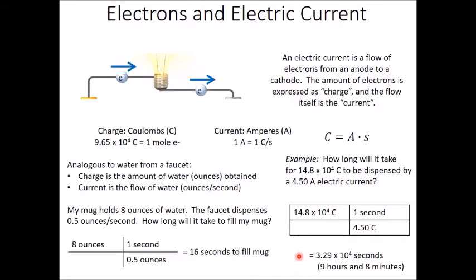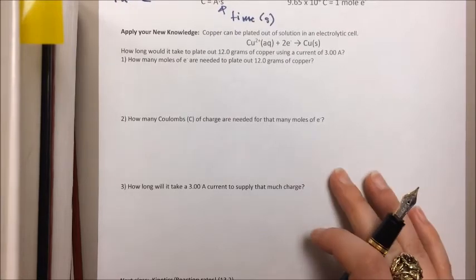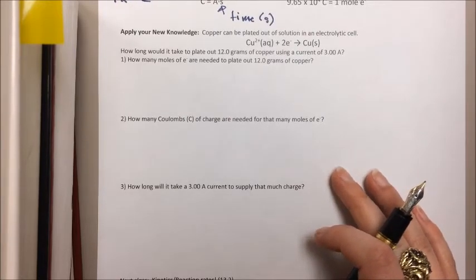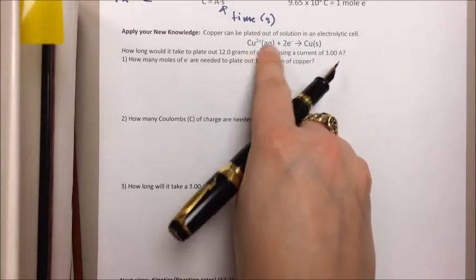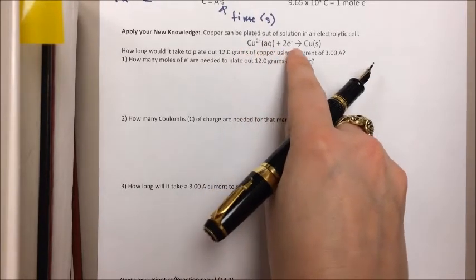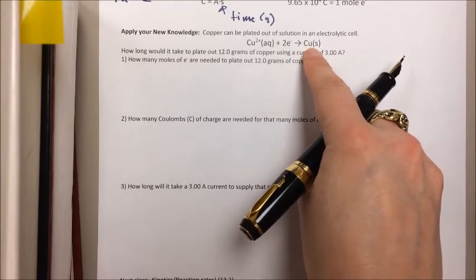Let's take a look at your example problem from lecture today and see how this works in a more realistic context. So here's your example problem. This is the last apply new knowledge from Friday's notes. Copper can be plated out of solution in an electrolytic cell. The copper 2+ ion will react with two electrons to make copper in its solid elemental state, copper zero.